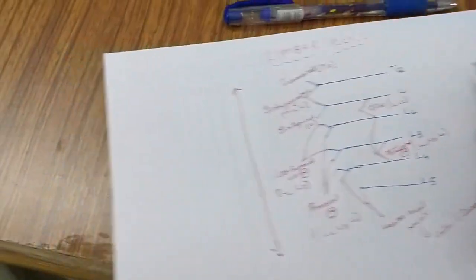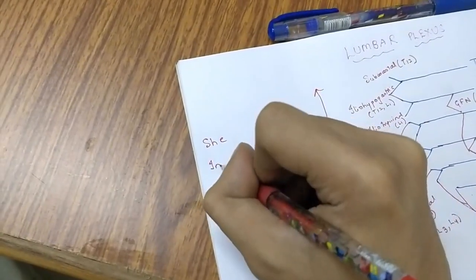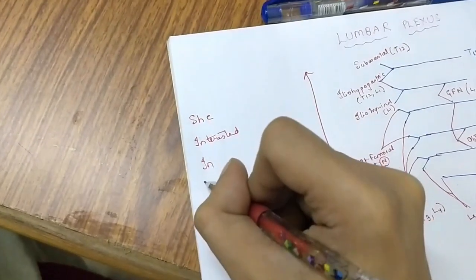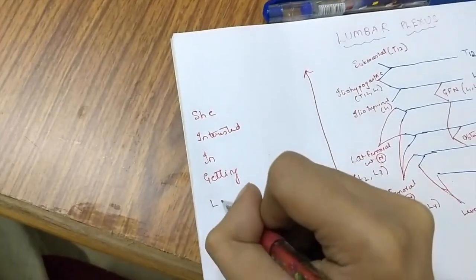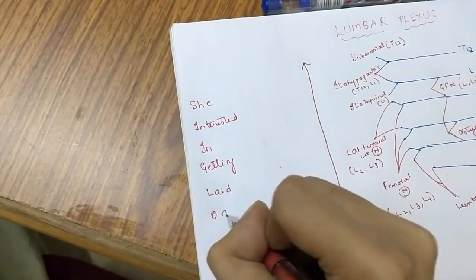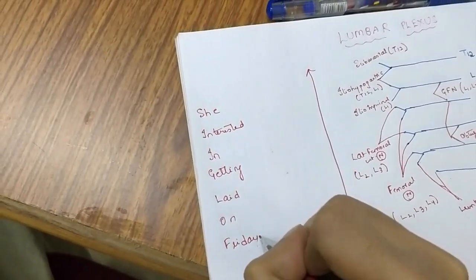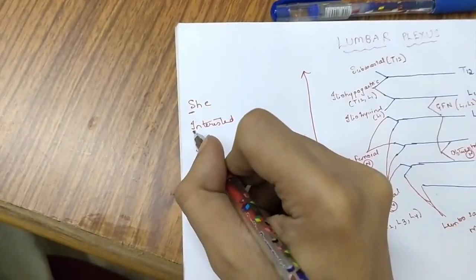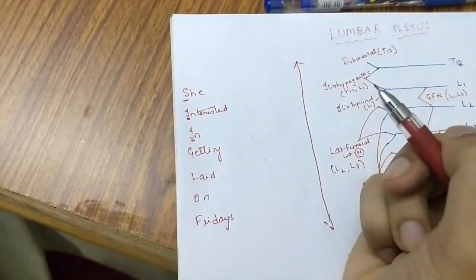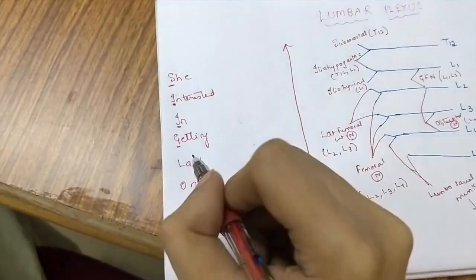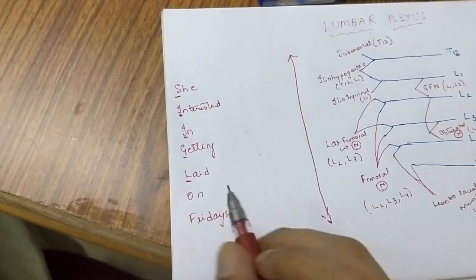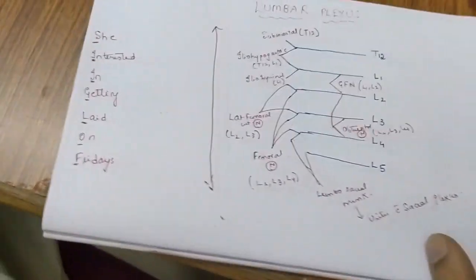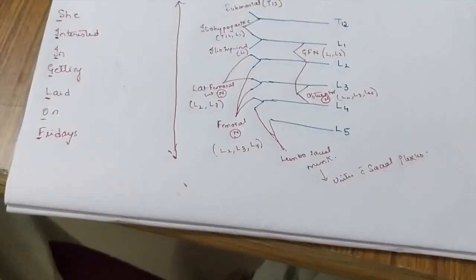To remember all these, you can use a mnemonic: 'She Interested In Getting Laid On Fridays.' S stands for subcostal, I for iliohypogastric, IN for ilioinguinal, G for genitofemoral nerve, L for lateral femoral cutaneous nerve, O for obturator nerve, and F for femoral nerve. So this is lumbar plexus made simple. Thank you.